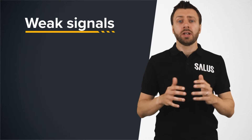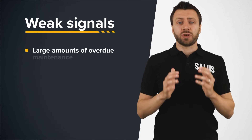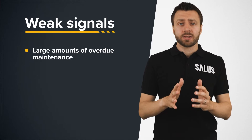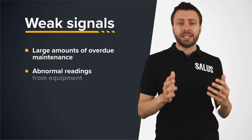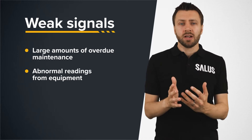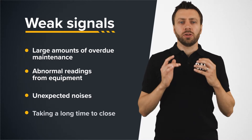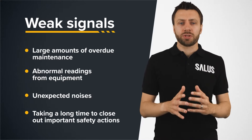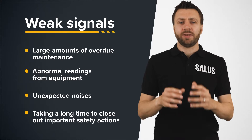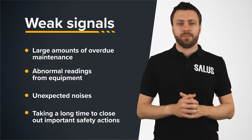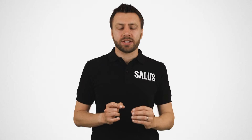Examples of weak signals include large amounts of overdue maintenance, abnormal readings from equipment, unexpected noises, or taking a long time to close out important safety actions. These each may seem unimportant, but it's important that we remain alert and vigilant to them.